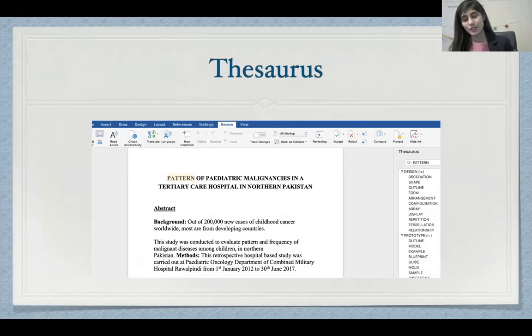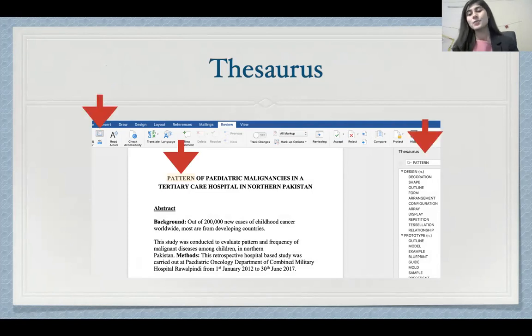There's also a thesaurus option which once again is very simple to use. You can highlight any word, click on the small dictionary icon towards the top left, and this will show you a list of synonyms for the word that you have selected, and you can select whichever one you want.